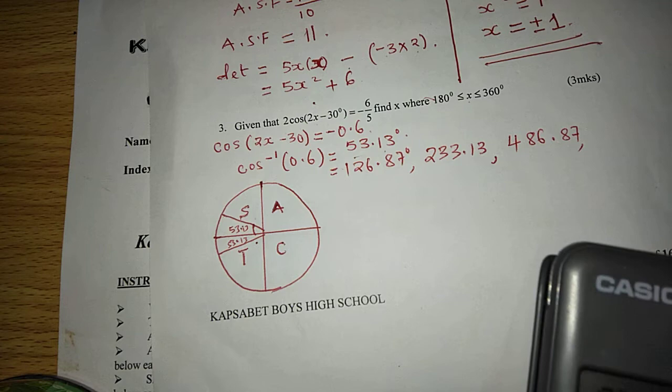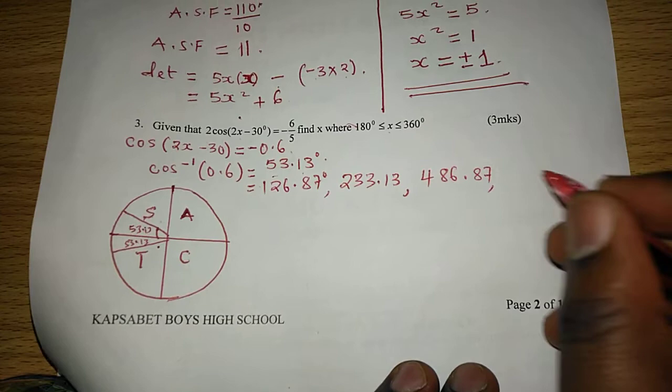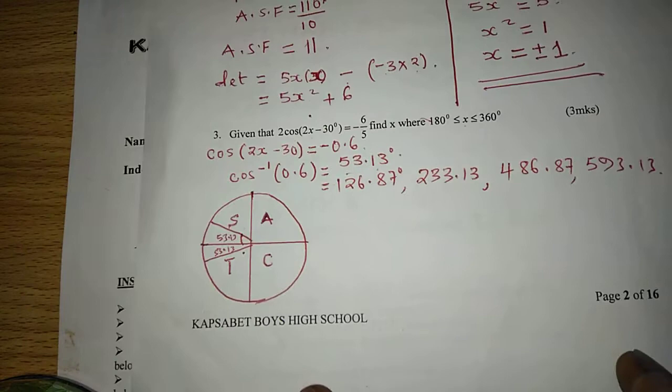And the next one will be when we take 233.13, then we add 360. This gives us 593.13 degrees.